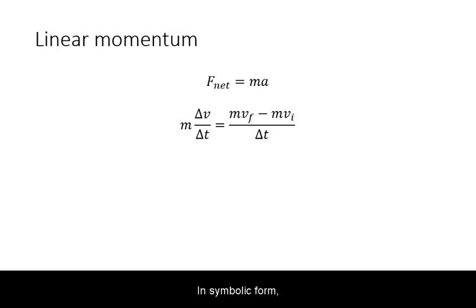In symbolic form, this was written as F equals Ma. Acceleration can be written as the change in velocity divided by change in time.